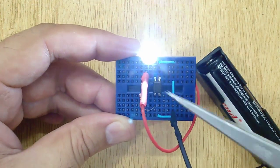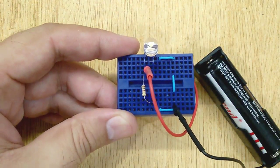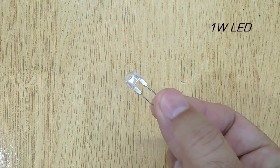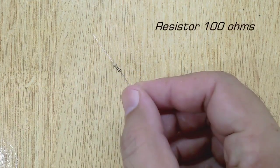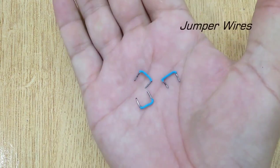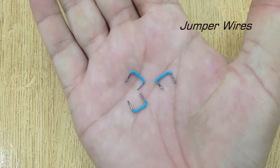For this basic electronic circuit, you will need a 1 watt LED, resistor 100 ohms, and jumper wires.